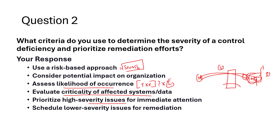In summary, the risk-based approach means determining control deficiency priorities based on the level of risk they pose to the organization. I identify the impact, assess the likelihood of occurrence, document threats and vulnerabilities, and patch the most critical items first. Prioritization also depends on the business context — for e-commerce, availability is first; for healthcare or defense, confidentiality severity takes priority.